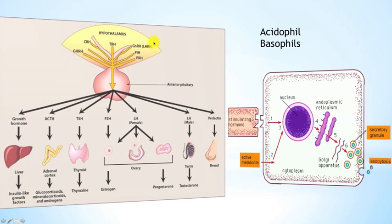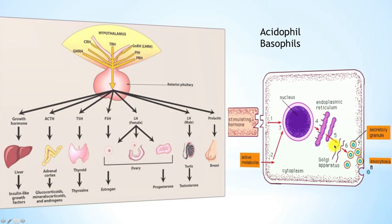When releasing hormones arrive, they bind to a receptor, are brought into the cell, travel to the nucleus, and are transcribed into mRNA. From the mRNA, they pass through the Golgi apparatus and become secretory granules. All the hormones produced by the acidophils and basophils are then secreted and distributed to the rest of the body.